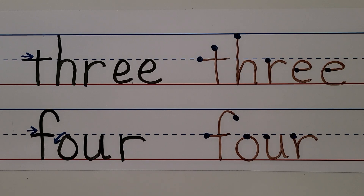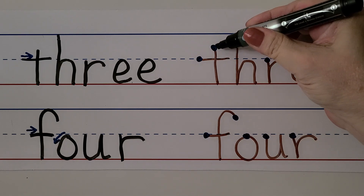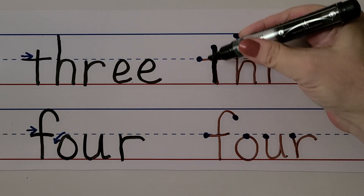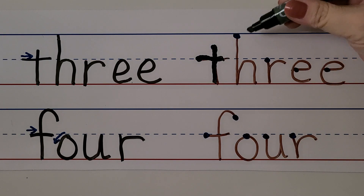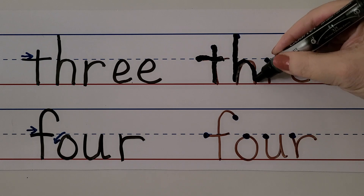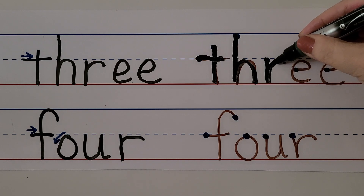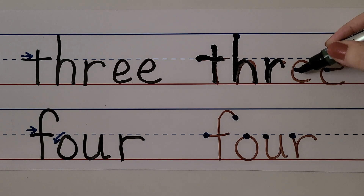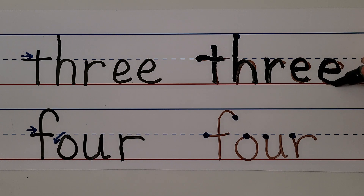For the right-handed students, we can write the word three. We start right here and we come down and then we come over here and we come across. That's the T. Then for the H, we start up here, we come down and bounce around. For the R, we start here, we come down and we bounce around. For the E, we start here and we come around and up like that with a little curl. We need another E. Three.